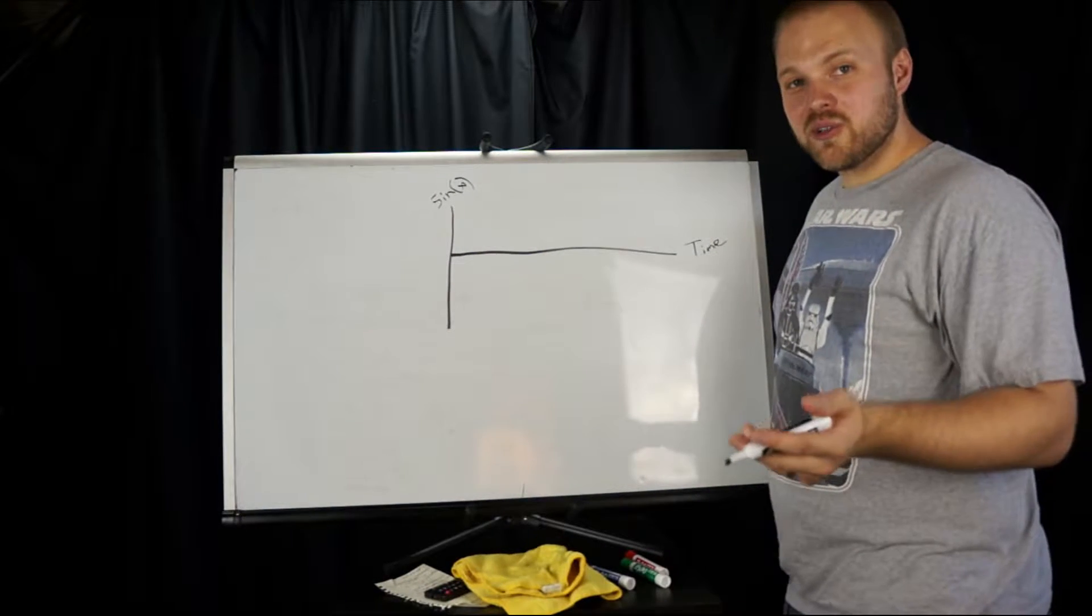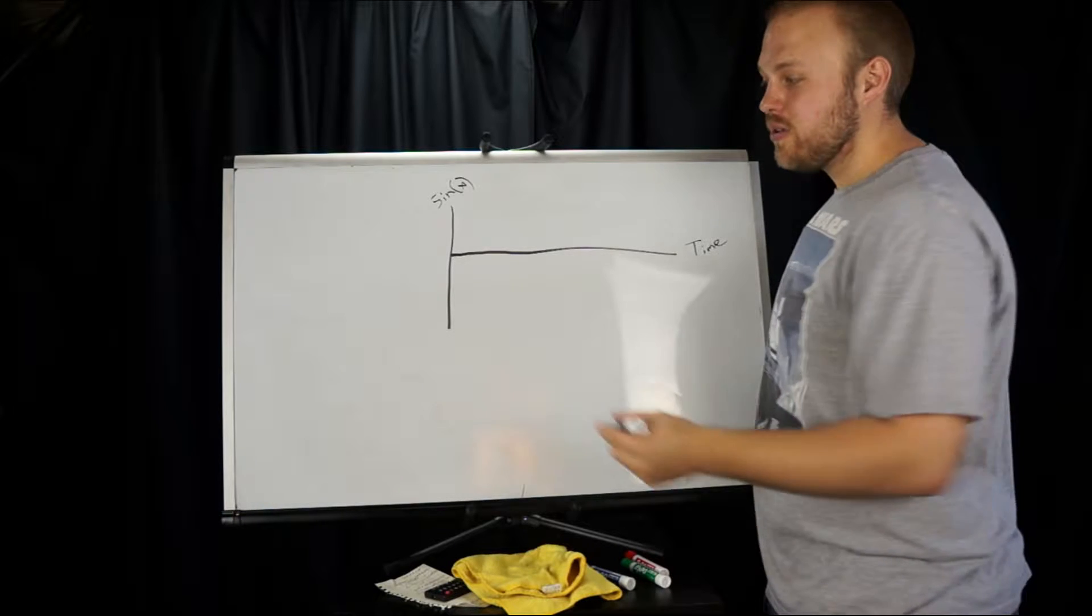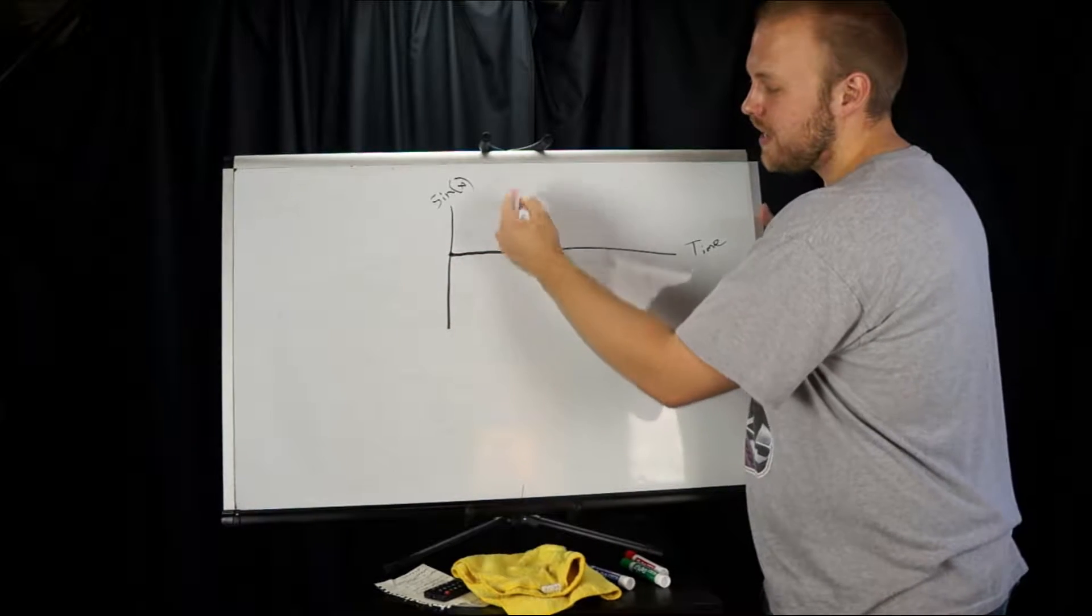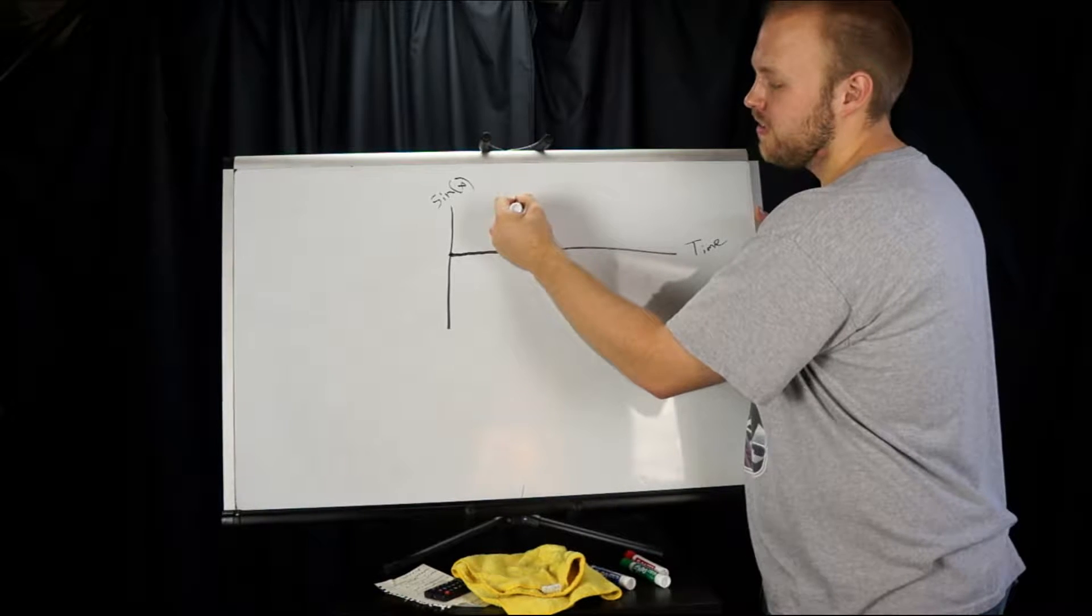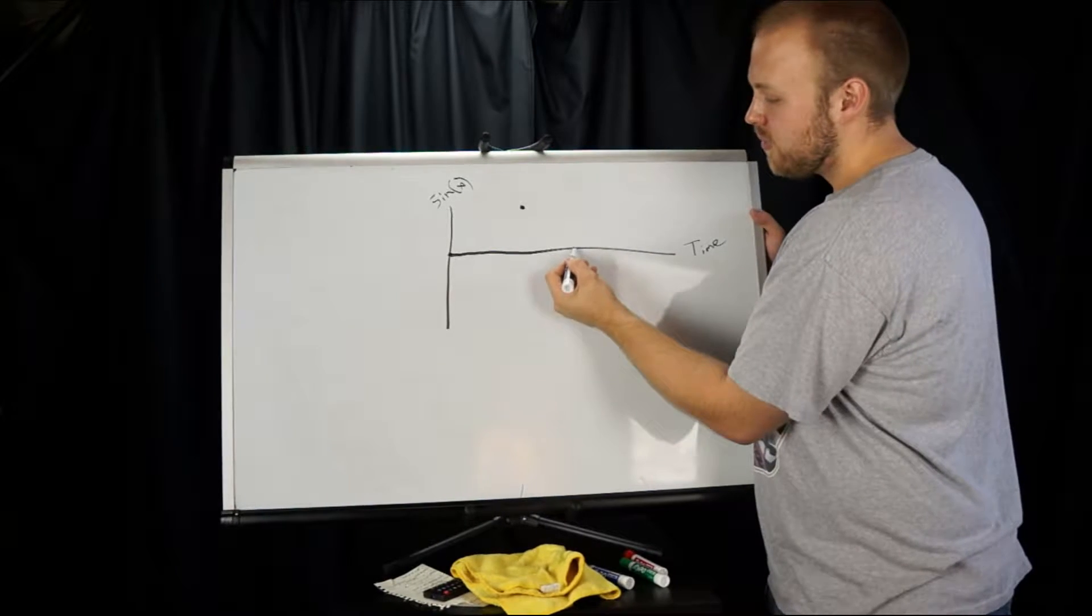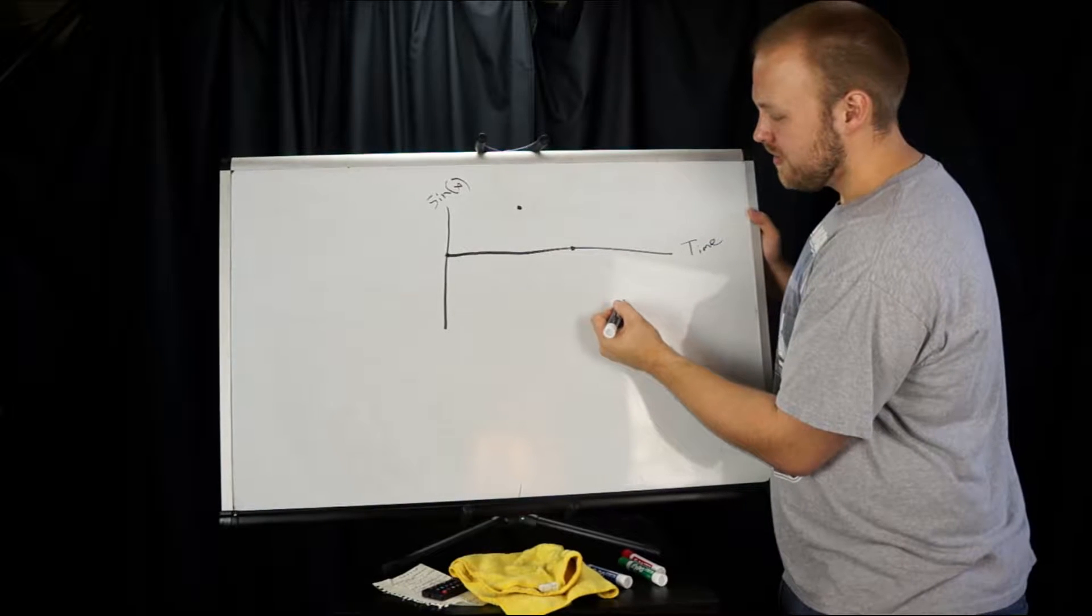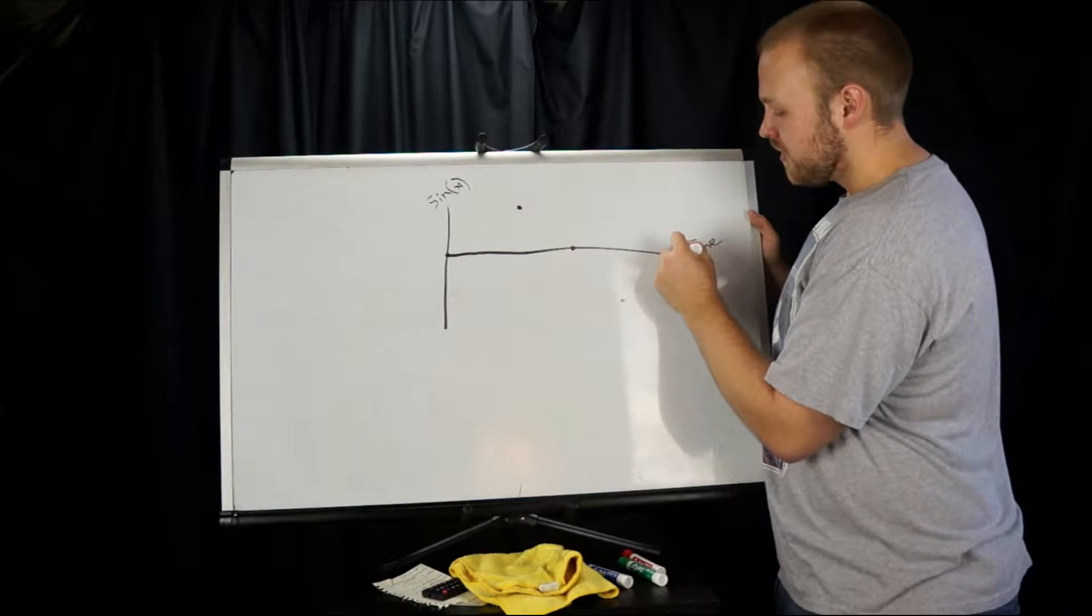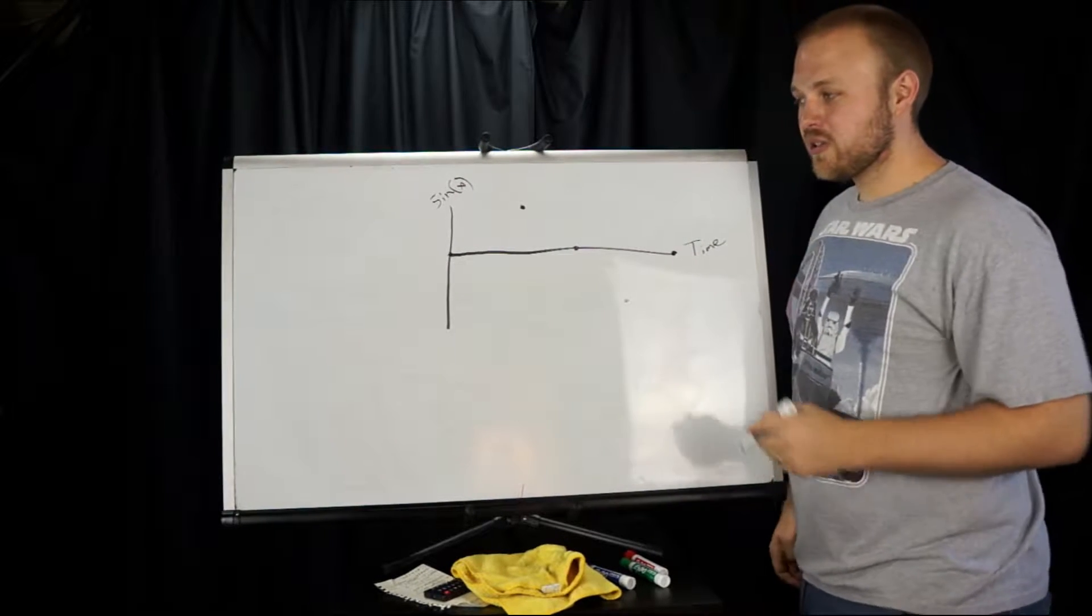So we're the dude walking around the circle, right? And we're just mapping what those values are. So at zero, it's zero. Some time goes by, and we're at one. Some more time goes by, and we're at zero again. A little more time, we're at negative one. And then we make it all the way back around the circle, and we're at zero.